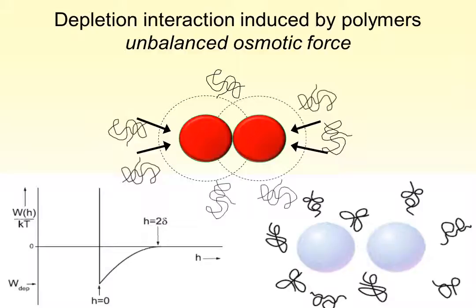It is in fact attraction through repulsion, or indirect attraction. The range and depth of the effective-attractive depletion interaction can be tuned by changing the size and concentration of the depletions.